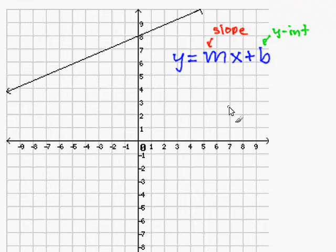So let's go ahead and identify the y-intercept. The y-intercept is where the line crosses the y-axis, and the line crosses the y-axis at 8, therefore our y-intercept is 8.